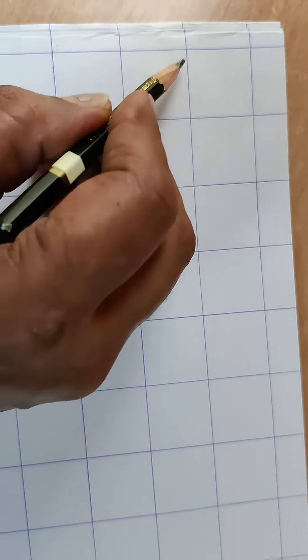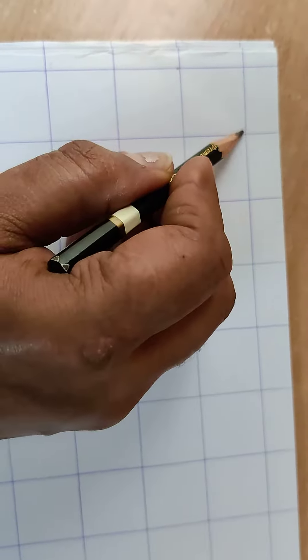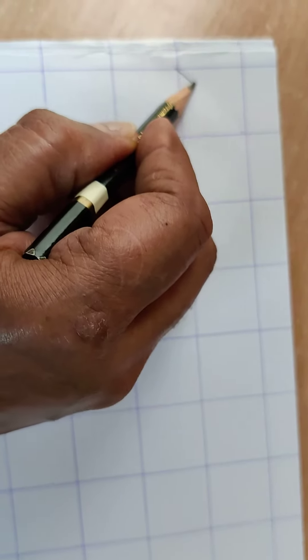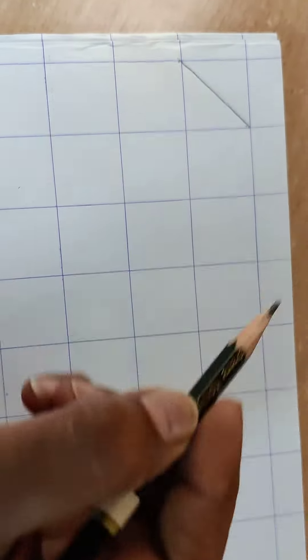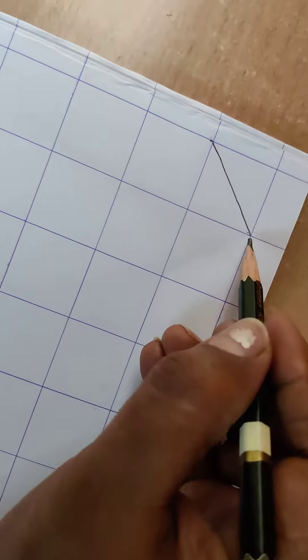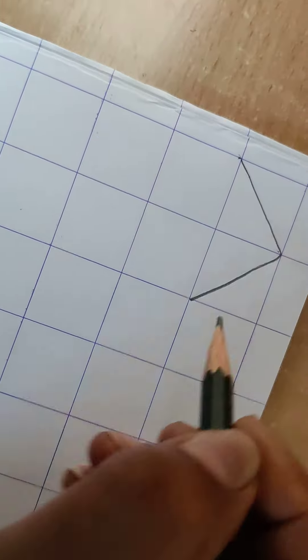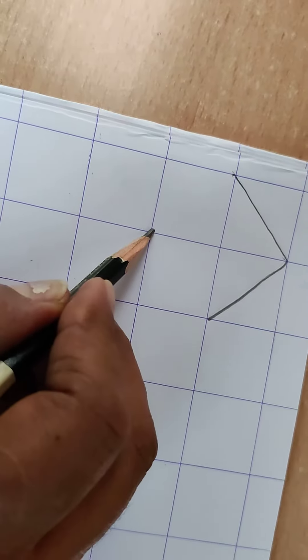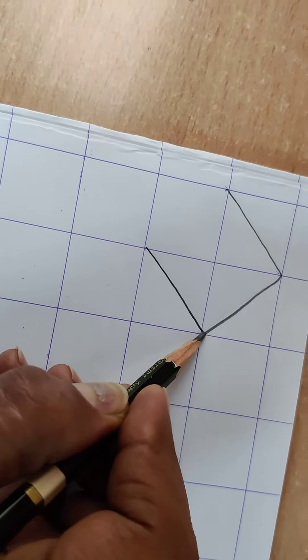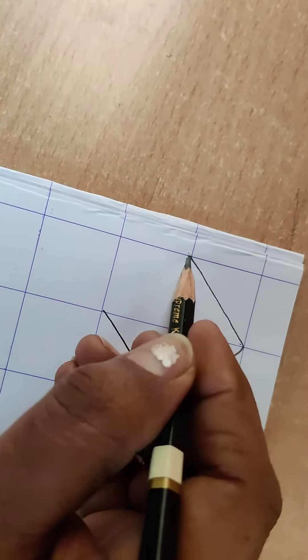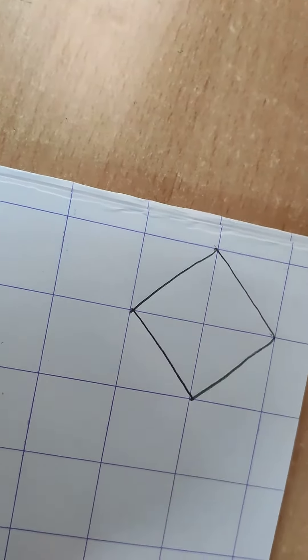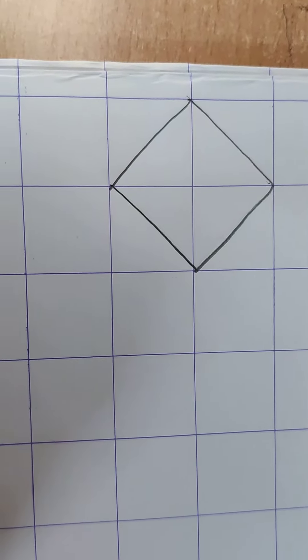So let's start from this point to this point. You have to draw a slanting line like this. Then from this point to this point you will draw another slanting line. Then this side and this side. Like this you have to make a diamond shape.